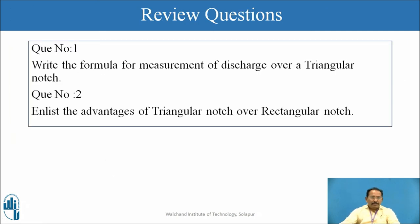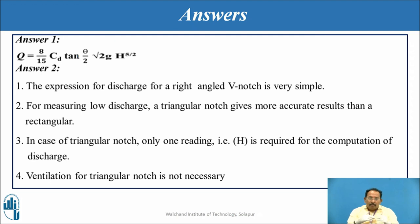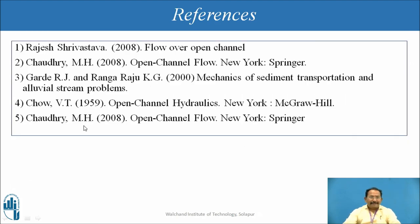Review questions: write the formula for measurement of discharge over a triangular notch and list the advantages of triangular notch over rectangular notch. Recall your memory and write the formula. While writing the advantages, view both rectangular notch and triangular notch and then write the points related to the advantages. These are some references — in the reference books you will get more problems.